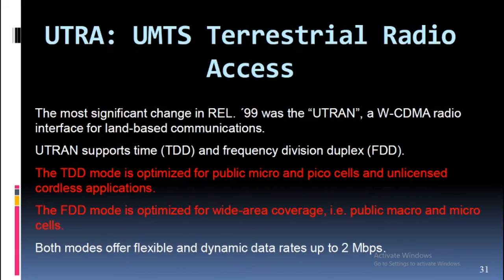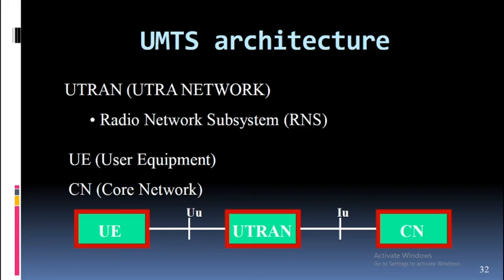UTRA (UMTS Terrestrial Radio Access): The most significant change in Release 99 was the UTRAN, a WCDMA radio interface for land-based communications. UTRAN supports Time Division Duplex (TDD) and Frequency Division Duplex (FDD). The TDD mode is optimized for public micro and pico cells and unlicensed cordless applications. The FDD mode is optimized for wide area coverage such as public macro and micro cells. Both modes offer flexible and dynamic data rates up to 2 Mbps.